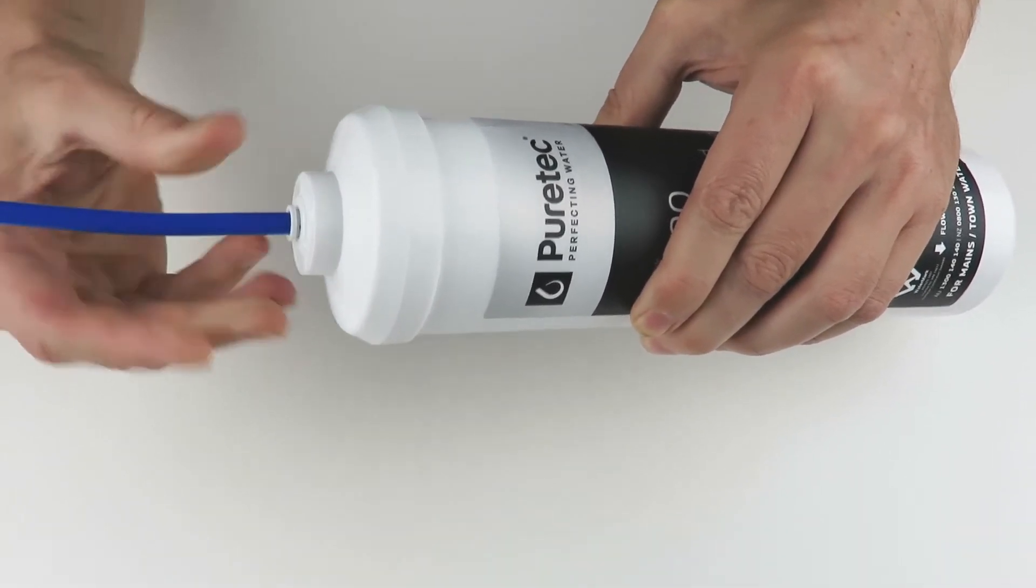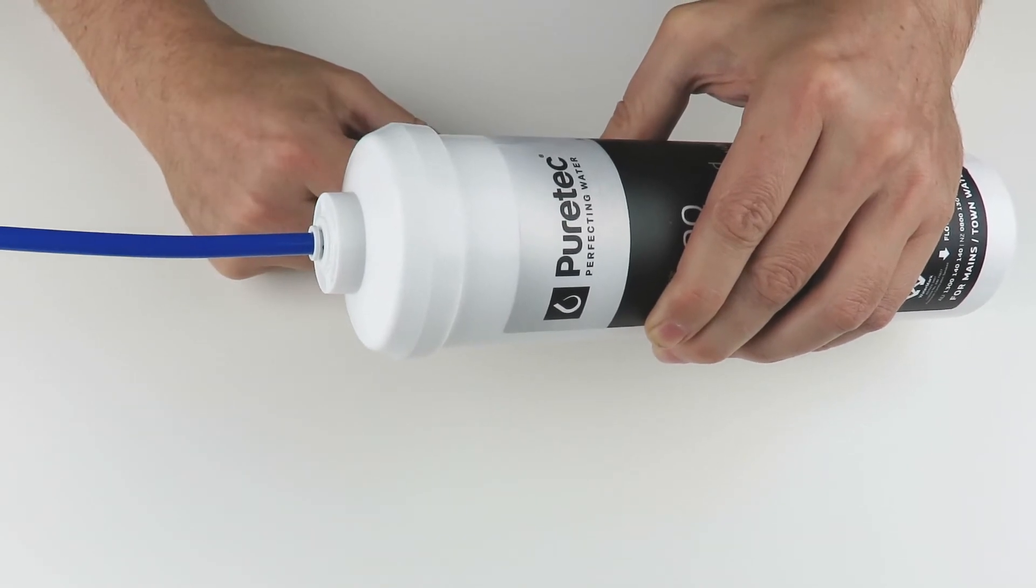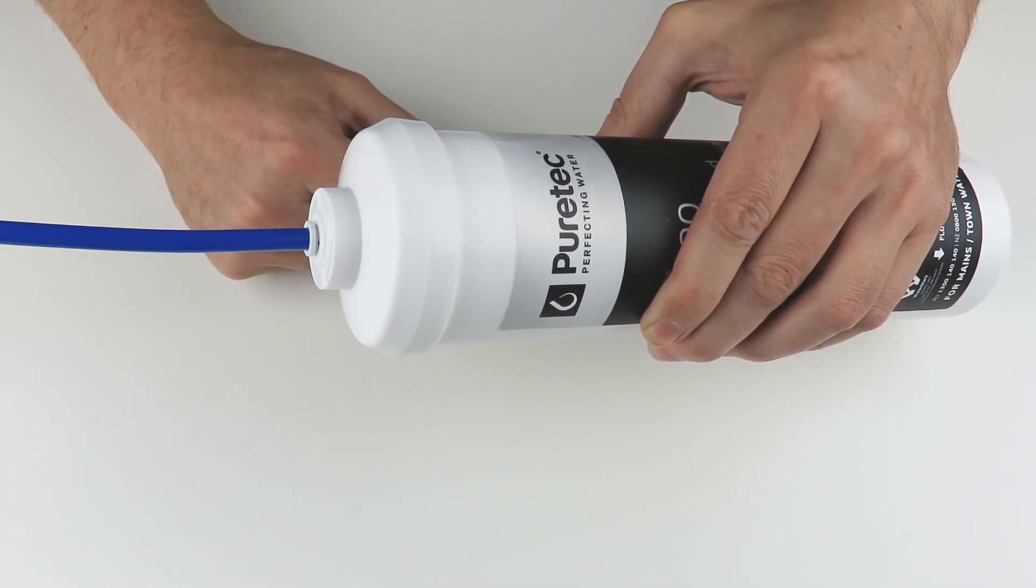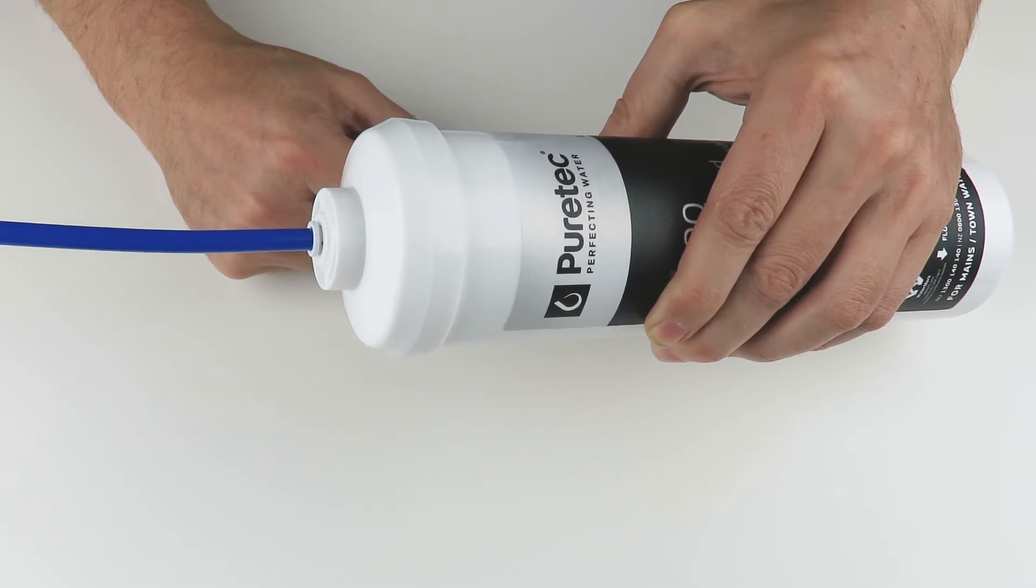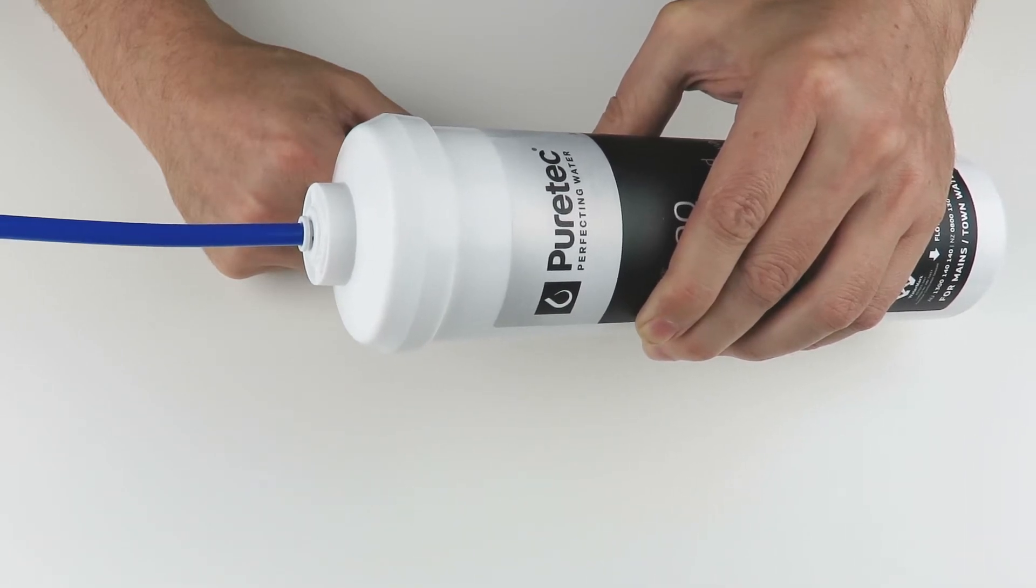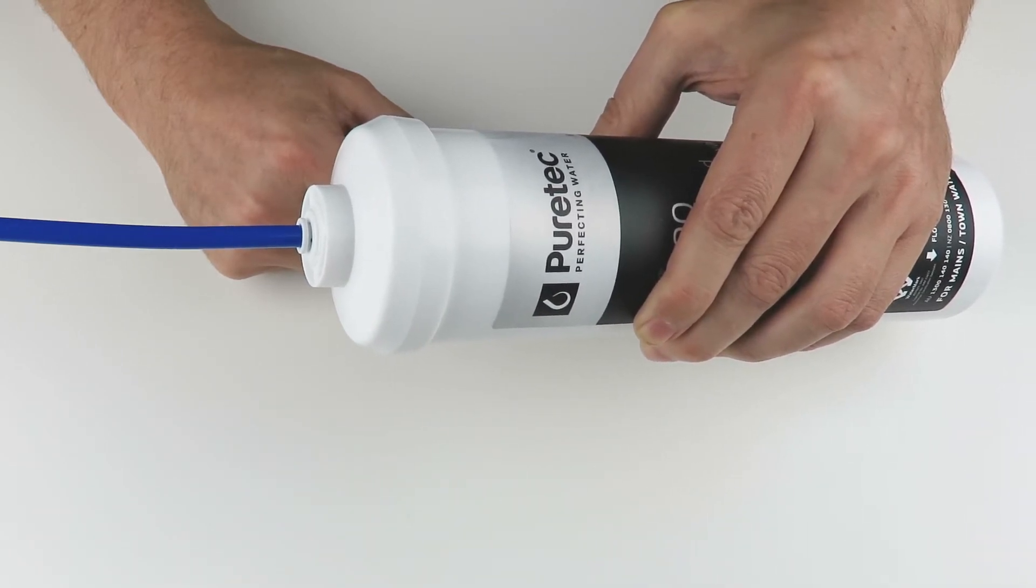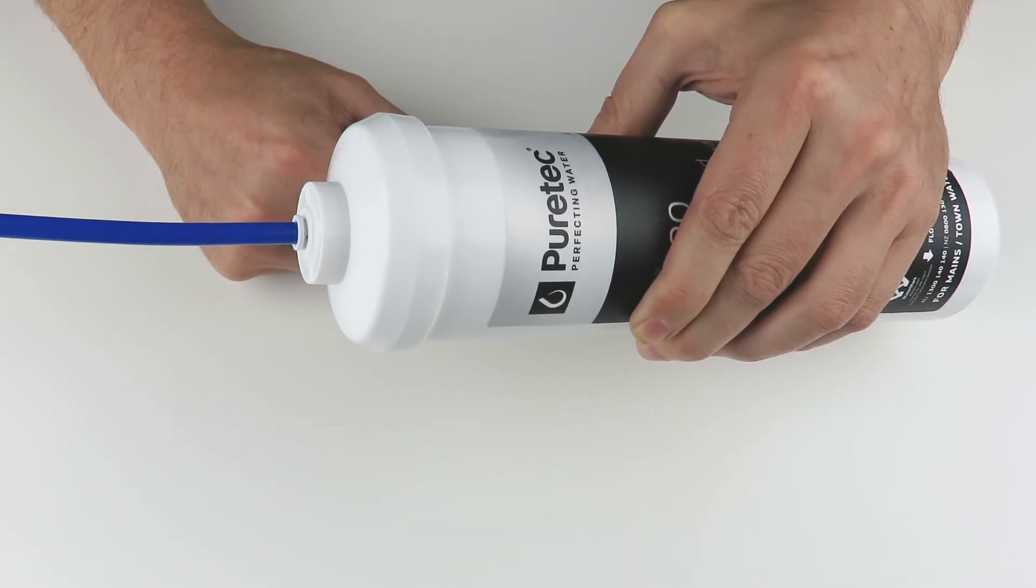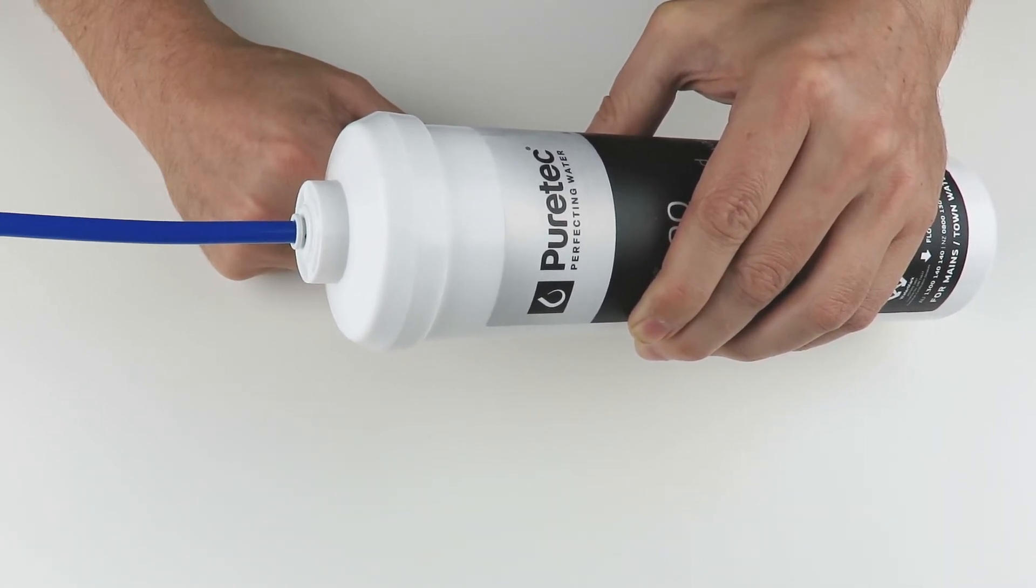To remove the hose from a push fit connection when replacing the cartridge, first isolate the water by turning off the valve of your smart tea. To release the pressure and confirm the water has been isolated, open the faucet and check the water flow stops.